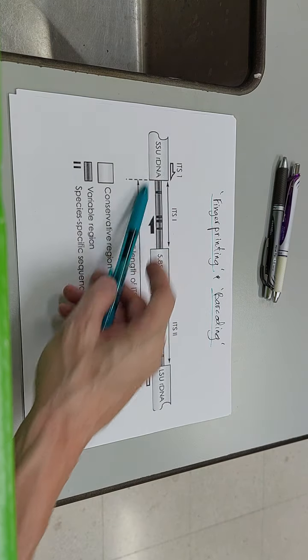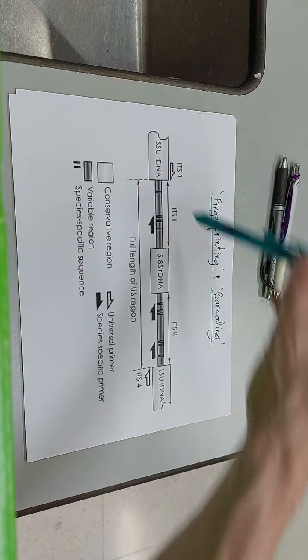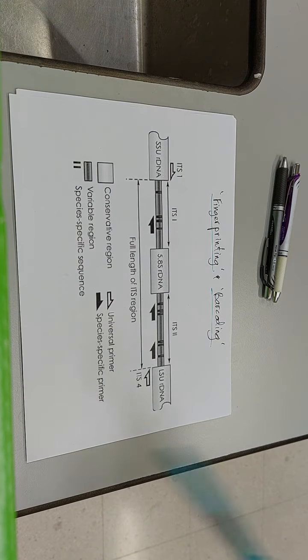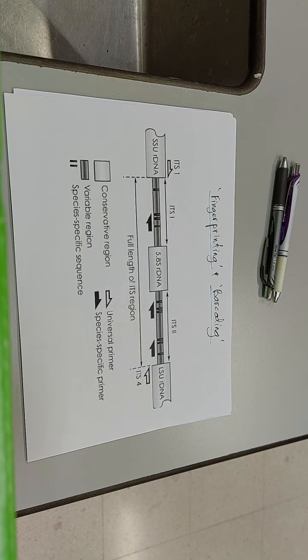When we use what you probably are familiar with already is what's called the ITS region, this is commonly used for species level identifications. When we get to this level of DNA sequence, which is a whole other topic in and of itself, we start talking about acronyms like ITS and SSU and LSU and 5.8s and EF1 and the terminology gets pretty dense pretty quick.